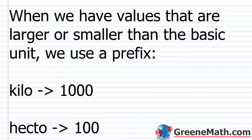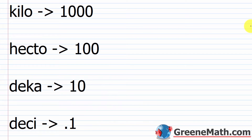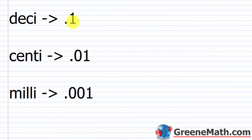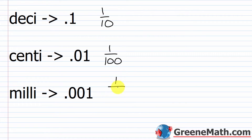One thing that's different about the metric system: when we have values that are larger or smaller than the basic unit, we use a prefix — a word that comes before the basic unit. For larger values: kilo stands for a thousand, hecto stands for a hundred, and deca stands for ten. For smaller values: deci stands for 0.1 or one-tenth; centi stands for 0.01 or one-hundredth; and milli stands for 0.001 or one-thousandth.